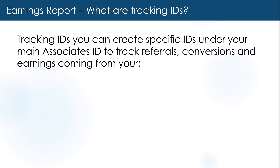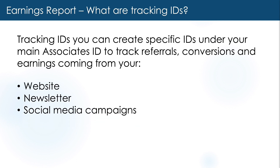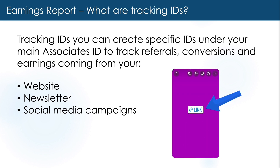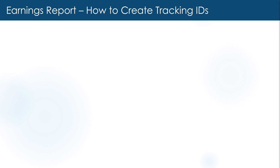What are tracking IDs? In Associate Central, you'll be able to create specific IDs under your main associate's ID to track things like referrals, conversions, and earnings coming from sources like your website, newsletter, as well as your social media campaigns. A great place to use tracking IDs is when you add a link to your Instagram stories to see how performance is versus your other sources.